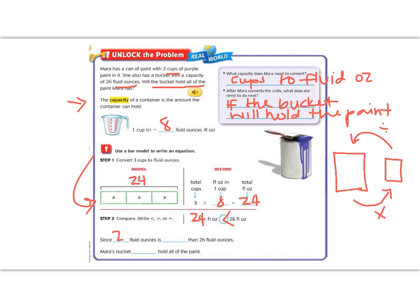So since 24 ounces is less than the 26 ounces that her bucket will hold, that means that her bucket will hold all of the paint with no extras left over.